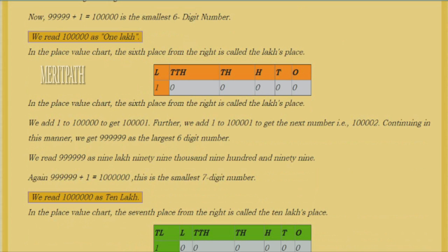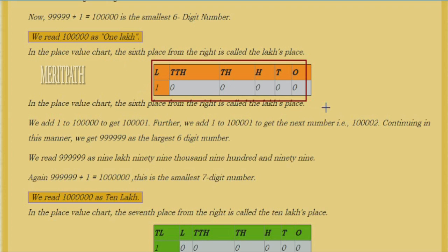Let's discuss the sixth place from the right in the place value chart. The sixth place from the right is called the lakhs place. Counting from the right: one, two, three, four, five, six — the sixth place is the lakhs place.